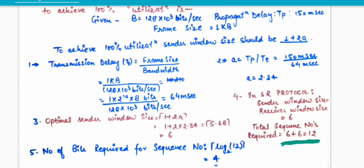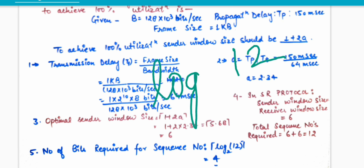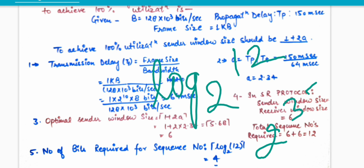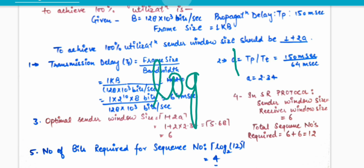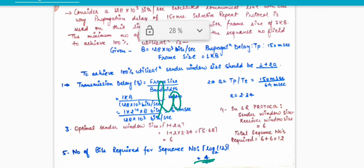To represent 12 sequence numbers, we calculate log base 2 of 12. If we take 2 to the power 3, that only represents up to 8. So we take 2 to the power 4, which represents 16 — some bits may be wasted. Therefore, number of bits required for sequence number equals log base 2 of 12, which gives us 4. So the number of bits required for the sequence number field is 4.